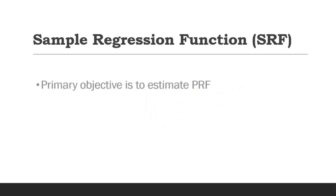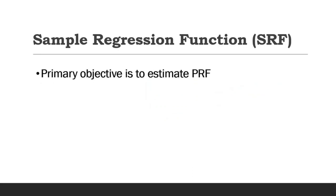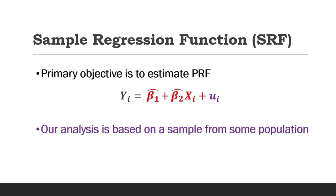Generally, our primary objective is to estimate the population regression function based on the sample regression function, because more often than not, our analysis is based on a sample from some given population.